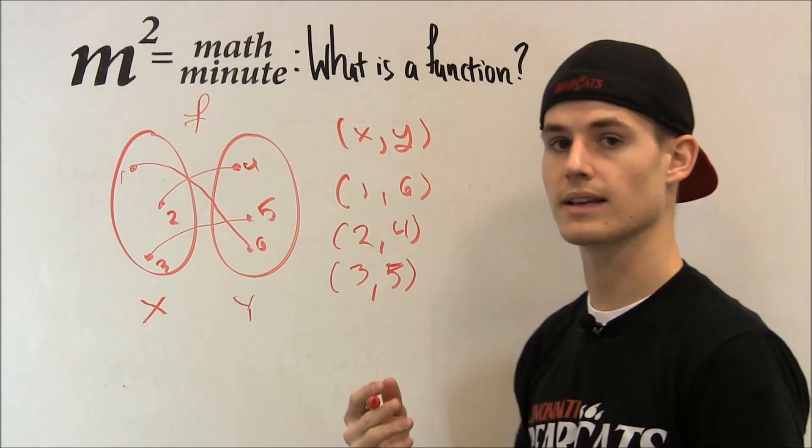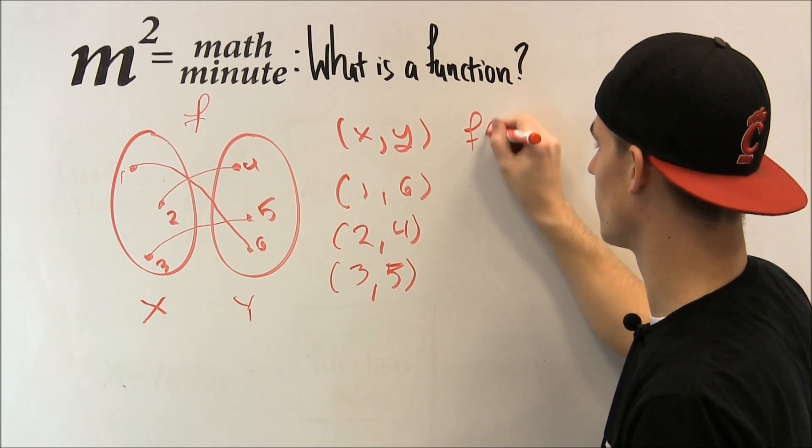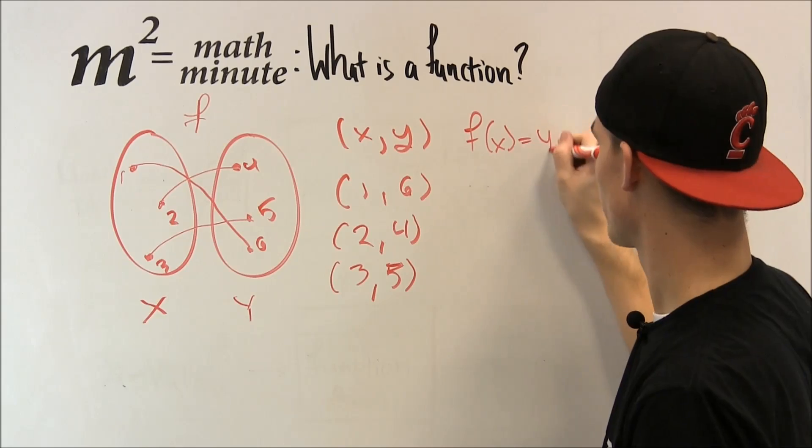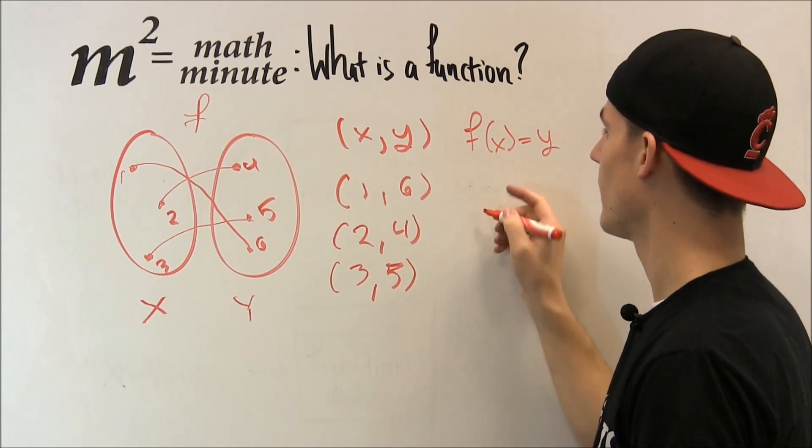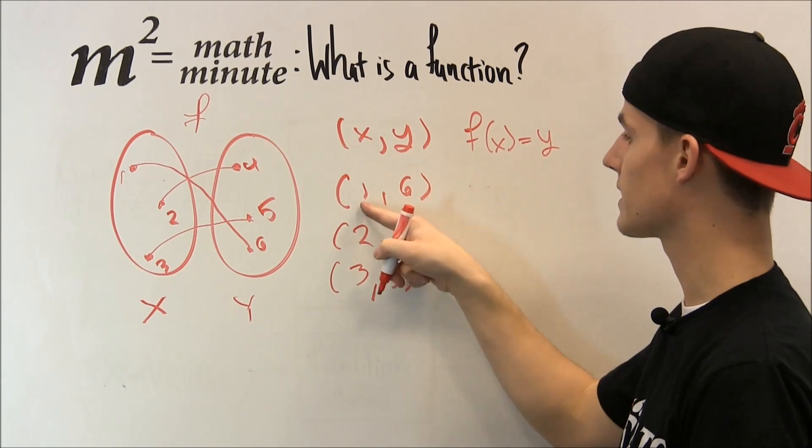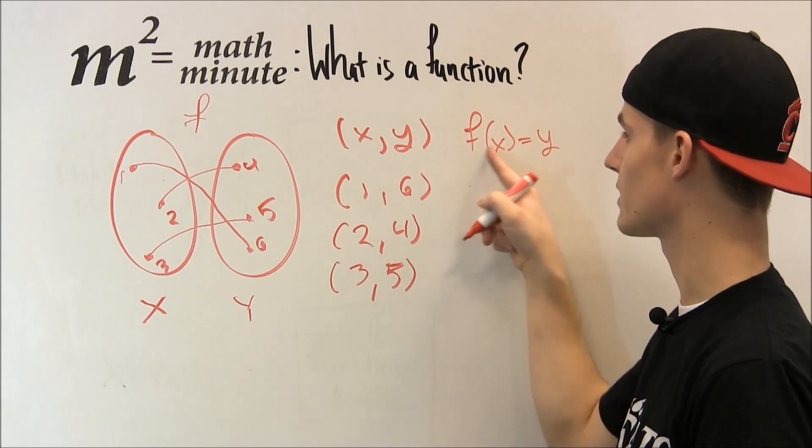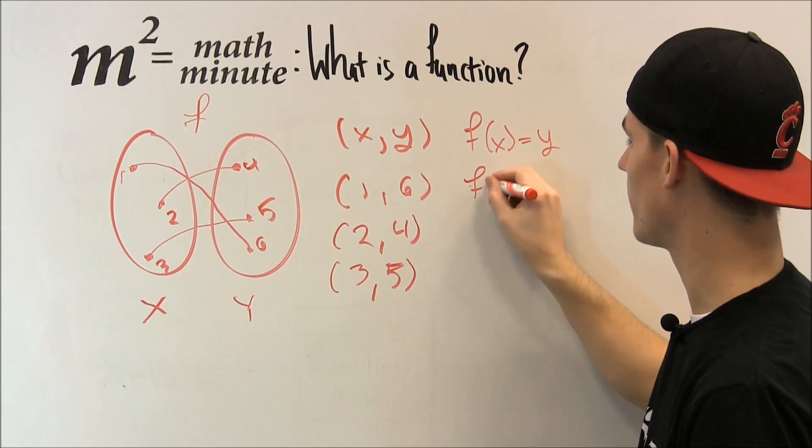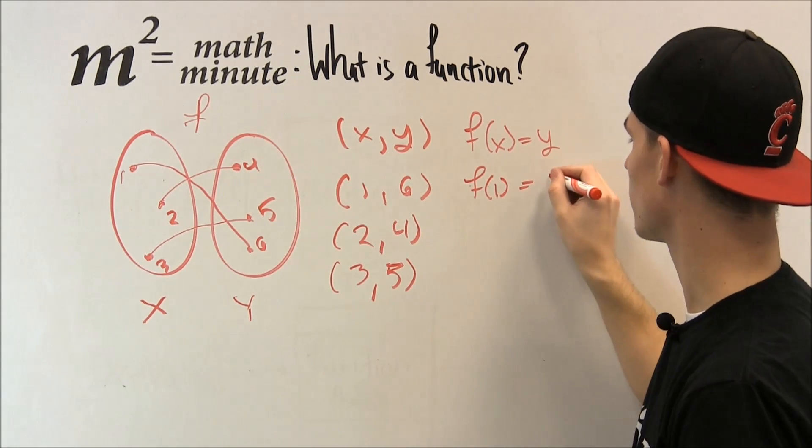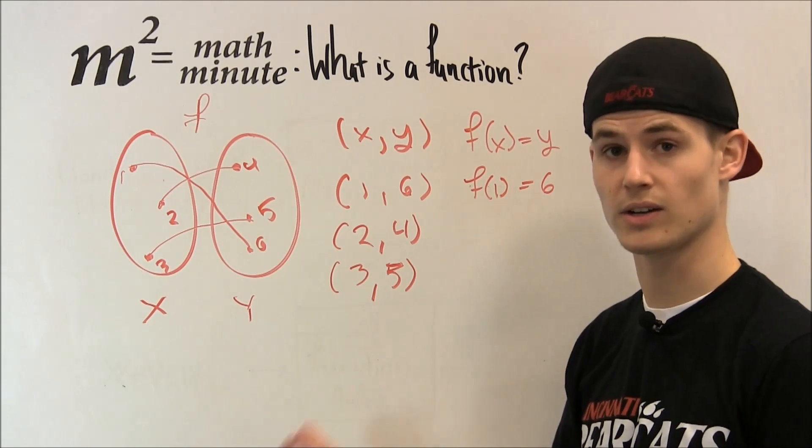One other way we're going to do this is writing it in this form. And this is going to be the way that we're going to be used to seeing it from here on out generally. Because what we're doing is we're plugging in this x value, 1, into this function, and we're getting out this y value. So f at 1 equals 6, or also known as f of 1.